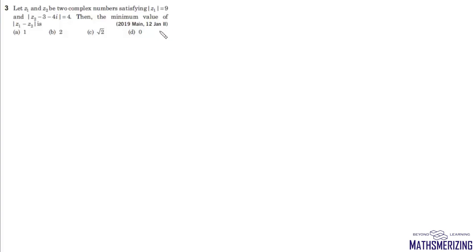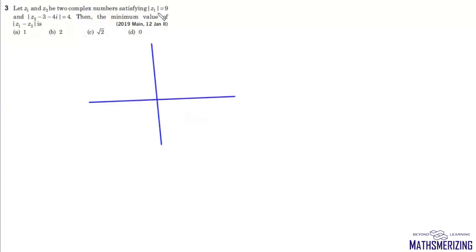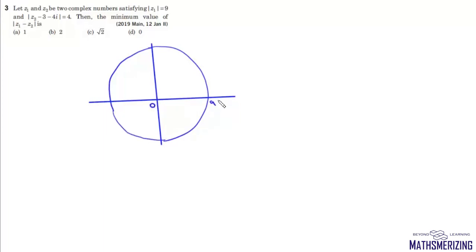Next question: let Z1 and Z2 be two complex numbers satisfying mod Z1 equals 9 and mod of Z2 minus (3 + 4i) equals 4. Find the minimum value of mod(Z1 - Z2). We draw the axis. Z1 lies on a circle with center at origin and radius equals 9 units.